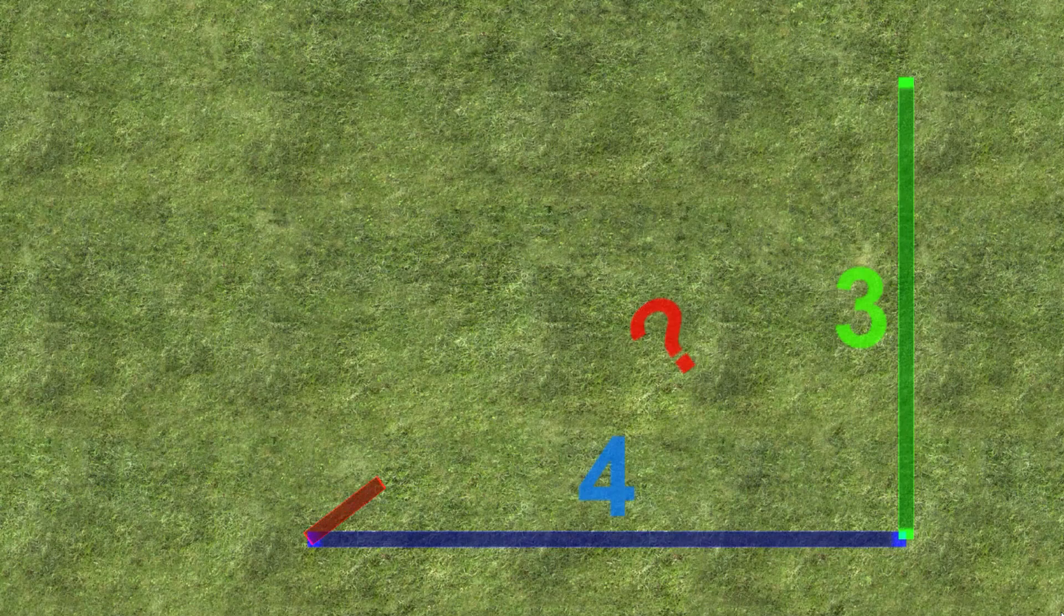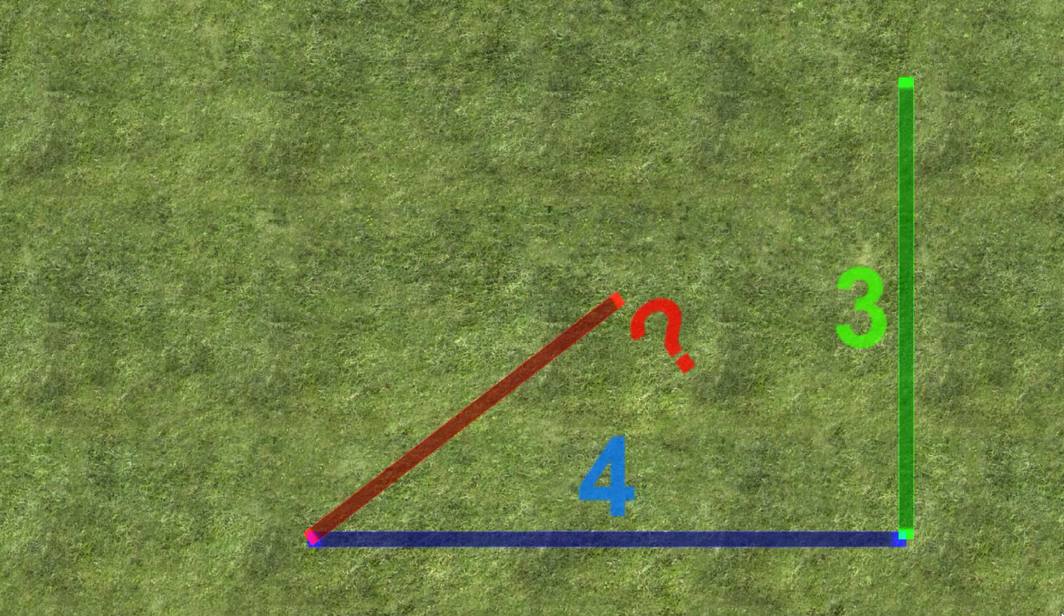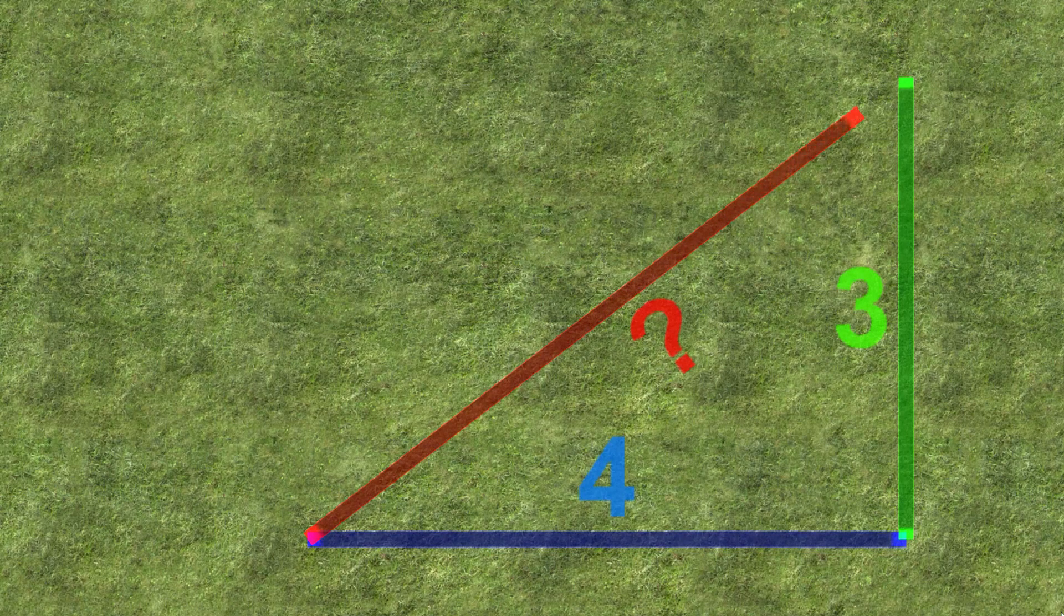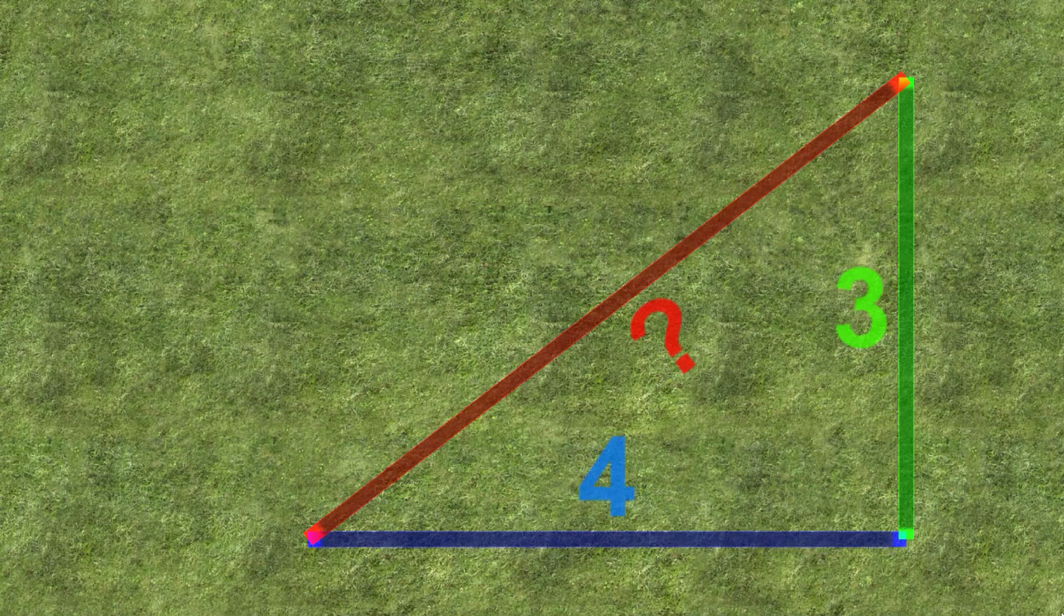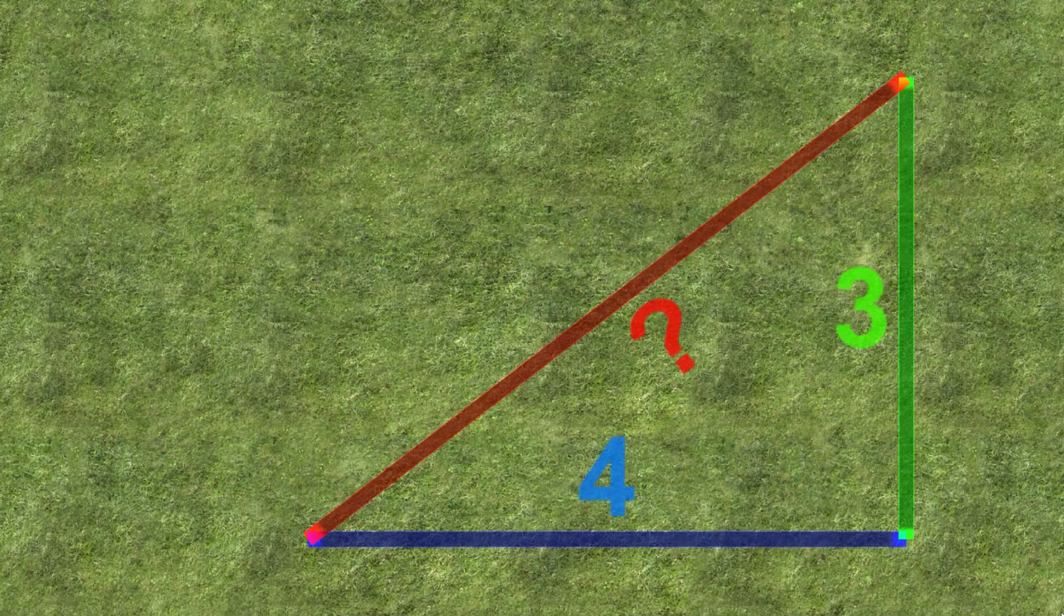Can you see that the hypotenuse now connects your starting and ending point? You could have walked straight from the starting point to the ending point. It is clearly further than the four meters you walked east, but since it's a shortcut it will also definitely not be further than the seven meters total you walked east and north.